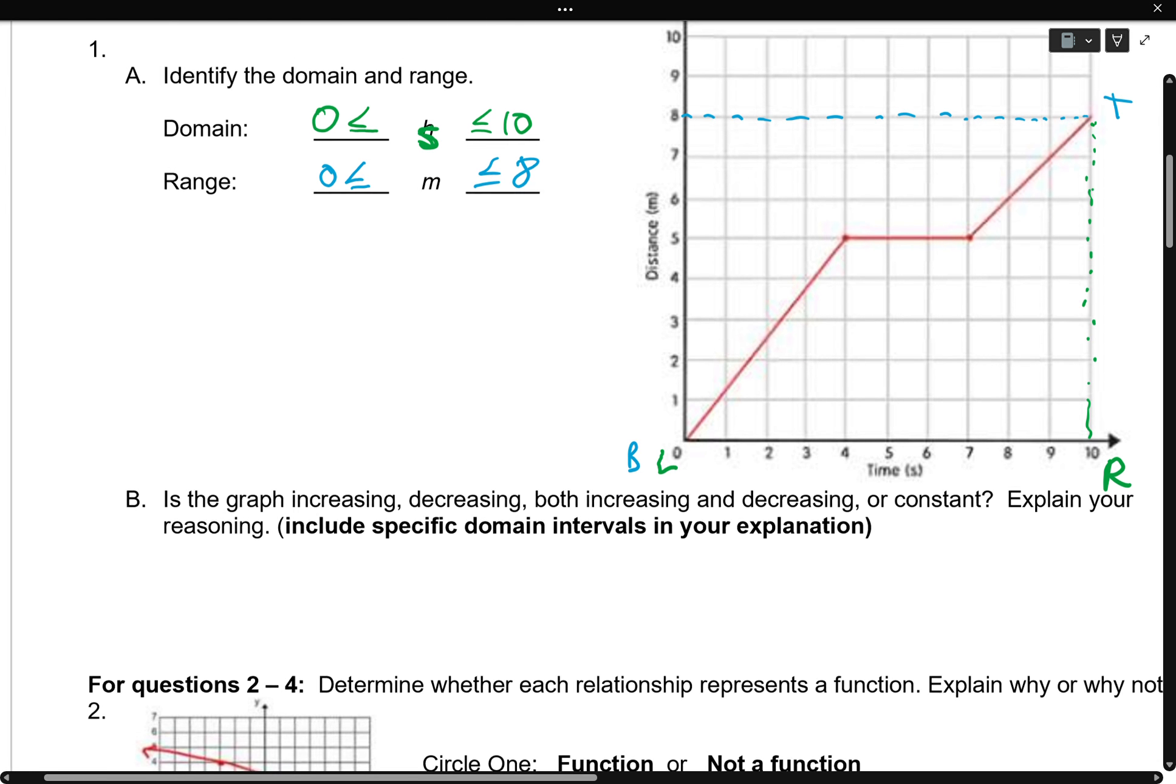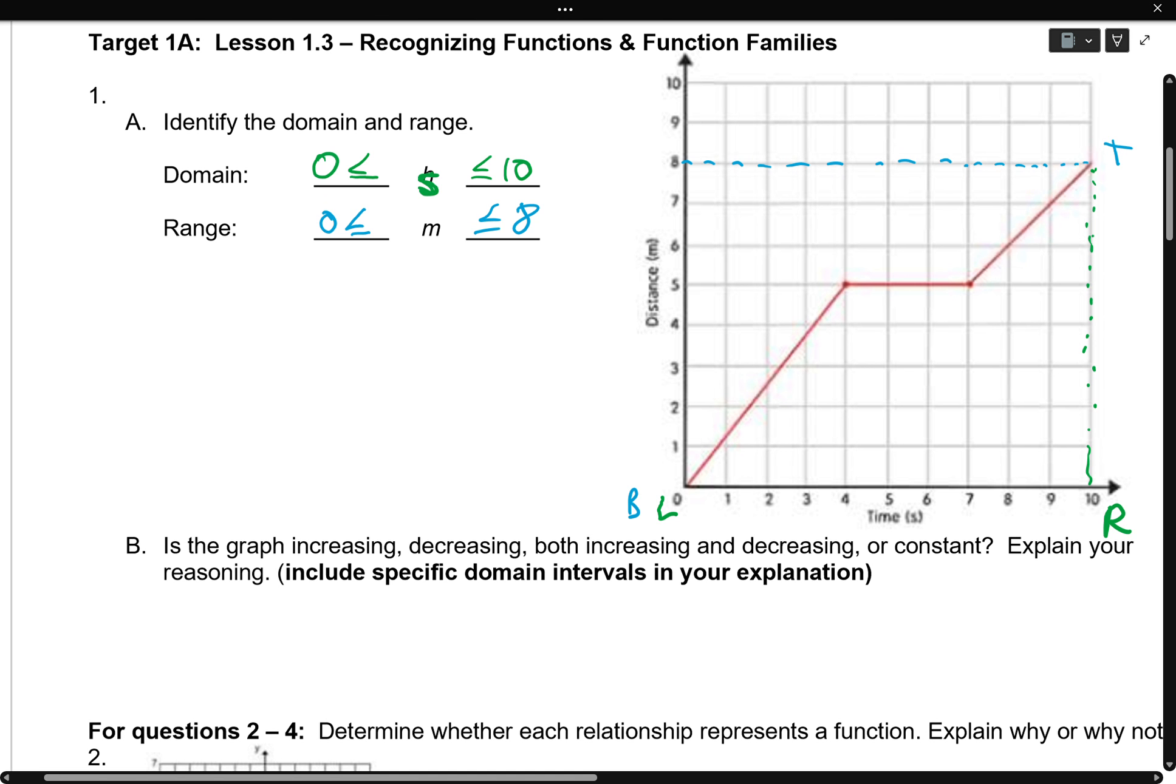Now the graph is increasing, decreasing, both increasing and decreasing, or constant. Let's explain our reasoning. So, I see two types of intervals. First, I see this one right here. From left to right, my pen is going up. So I'm going to call it I for increasing. My increasing starts at 0, and ends at 4. The next type of interval I have is this flat one right here. Now that flat one, I'm going to call that constant. Now the constant interval starts at 4, and it ends at 7. Lastly, I've got another increasing interval that starts at 7, and ends at 10.